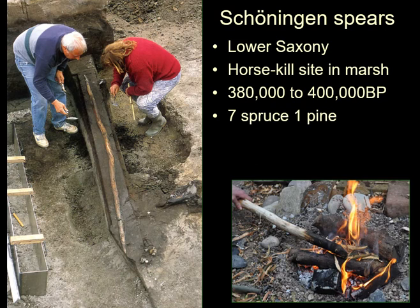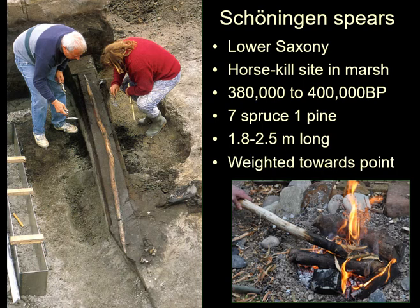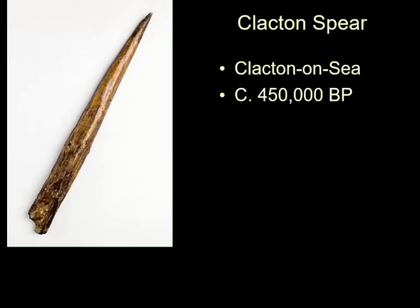Seven of them were spruce and one was made of pine. They're about two meters long and weighted towards the point, so they're probably for throwing at horses to eat them. Most likely. This is the Clacton spear of about the same date, and it probably looked like the Schöningen spears when it hadn't rotted off at the end.